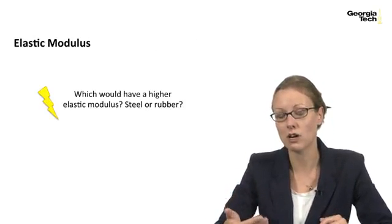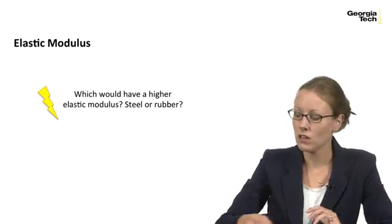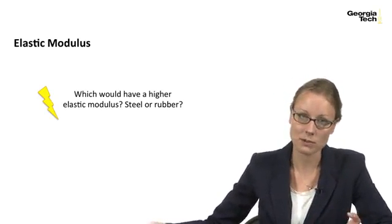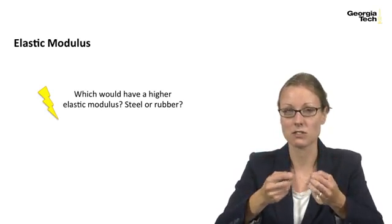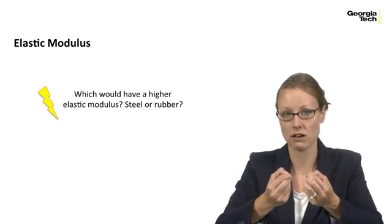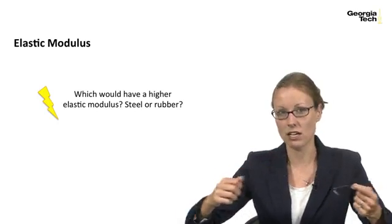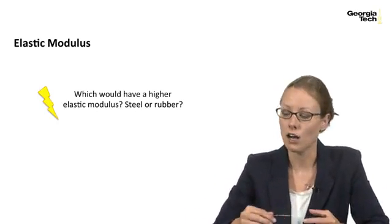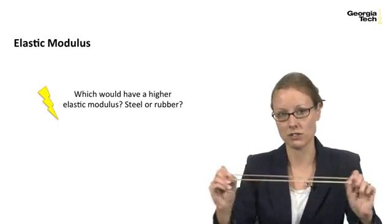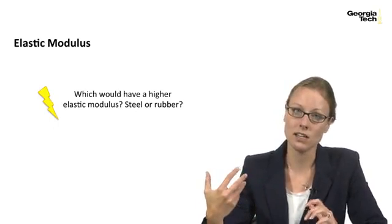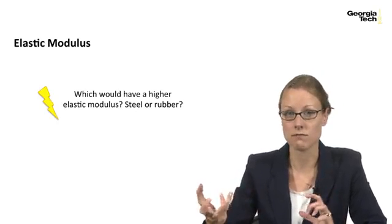Which would have a higher modulus of elasticity, steel or rubber? We can actually run a really simple experiment. When I pull on steel, this is a paper clip that I've bent to be straight and I'm pulling on it. And you can see I really can't deform it at all, right? I can cause very little deformation in this direction. But when I pull on rubber, it's very easy to cause deformation. So the modulus of elasticity for steel is much higher than that of rubber. Steel is much stiffer than rubber.